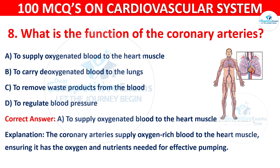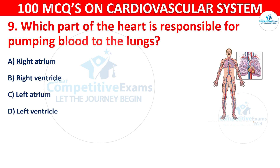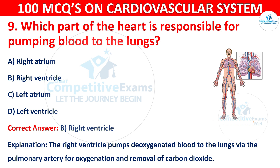Q9. Which part of the heart is responsible for pumping blood to the lungs? Options are: right atrium, right ventricle, left atrium, or left ventricle. The correct answer is B — right ventricle. The right ventricle pumps deoxygenated blood to the lungs via the pulmonary artery for oxygenation and removal of carbon dioxide.